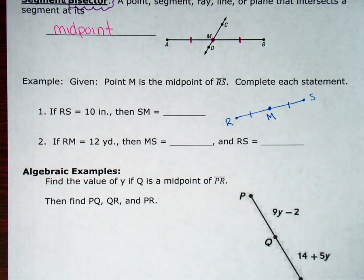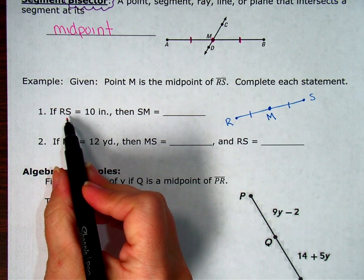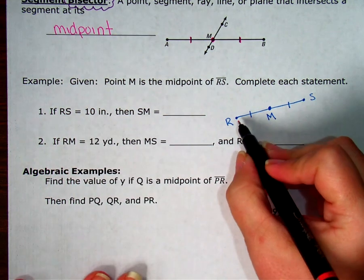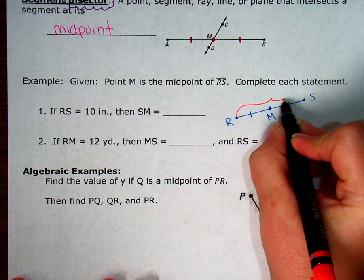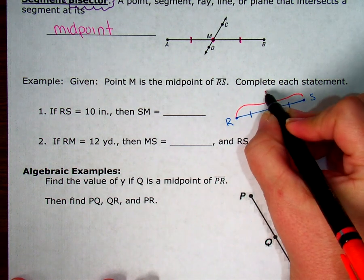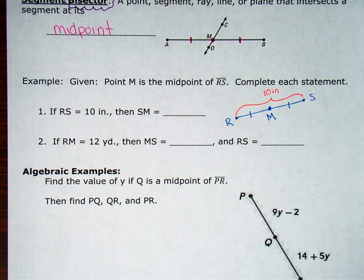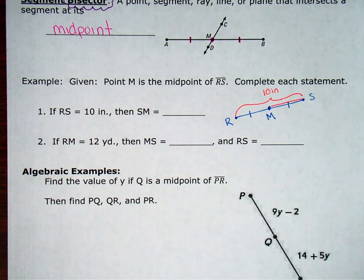Let's see what we're going to do next. So next I'm going to label, I'm going to look at number one and say, okay, RS, the distance from R to S equals 10 inches. So the distance from R to S equals 10 inches. It says, well, then how long is it from S to M? So how long is this piece right here?